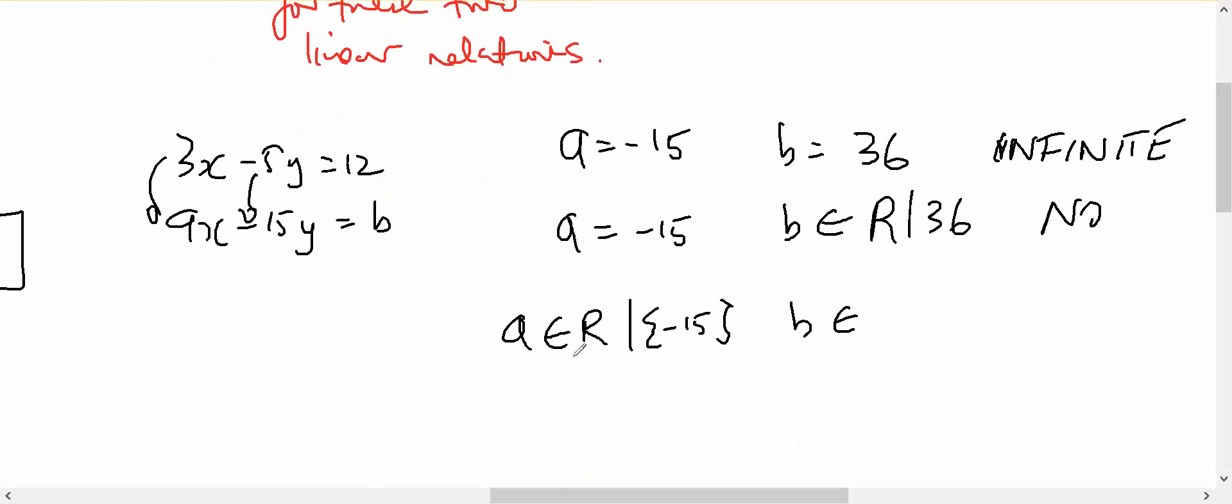And if A doesn't equal negative 15, we don't have parallel lines, and B can be anything at all, and we will have unique solutions.